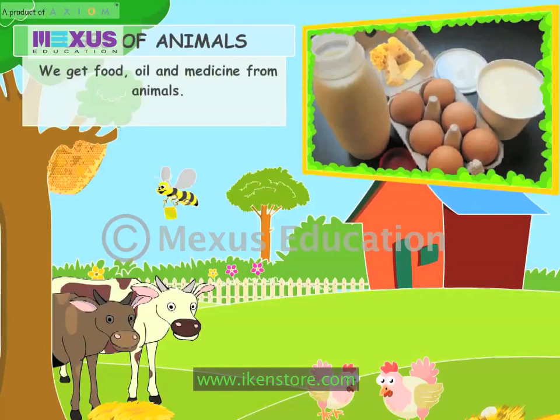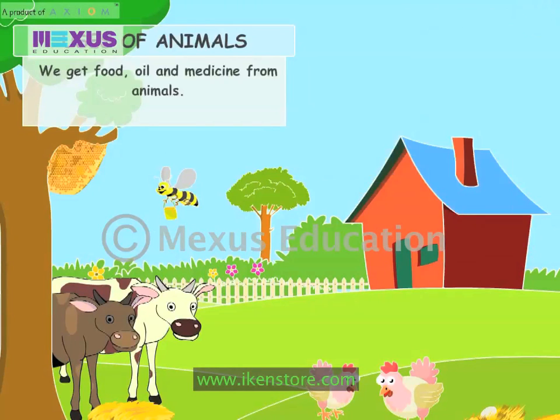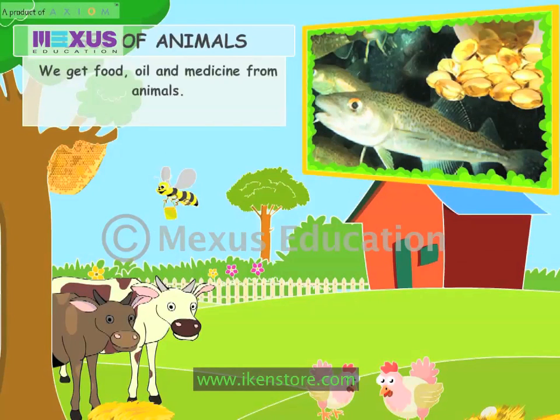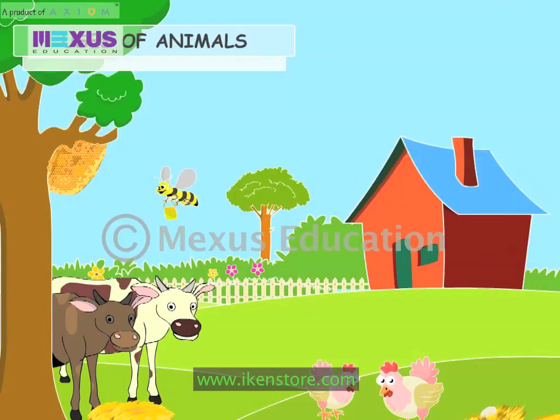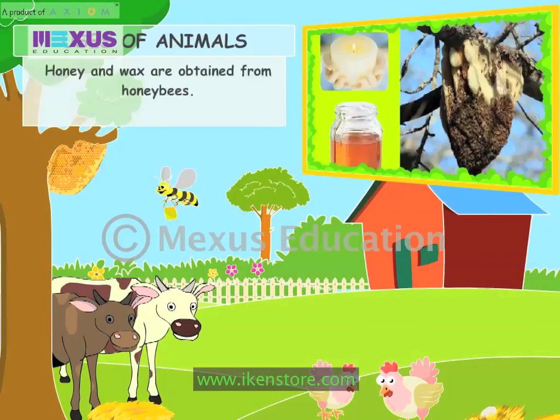We get food, oil and medicine from animals. Honey and wax are obtained from honey bees.